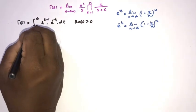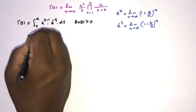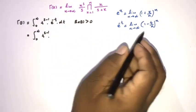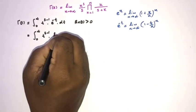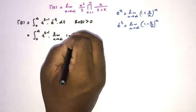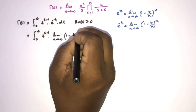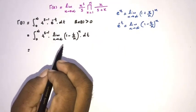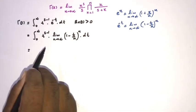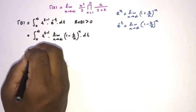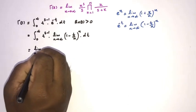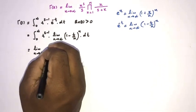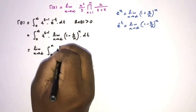Therefore we can write gamma of s as the integral from 0 to infinity of t^(s-1) times the limit as n approaches infinity of (1 - t/n)^n dt. Since the convergence of the integral is uniform, we can switch the limit and integral signs.